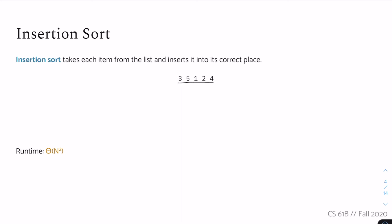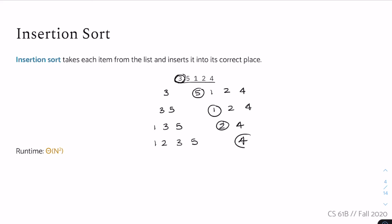So let's say we have this list. The first thing we do is look at the first number, three, and in the first iteration we just have three in our sorted list, with five, one, two, and four in our unsorted list. Next iteration we look at five — it comes after three. Then we sort one in, then two, giving us one two three five, and lastly we sort four in and get one two three four five.